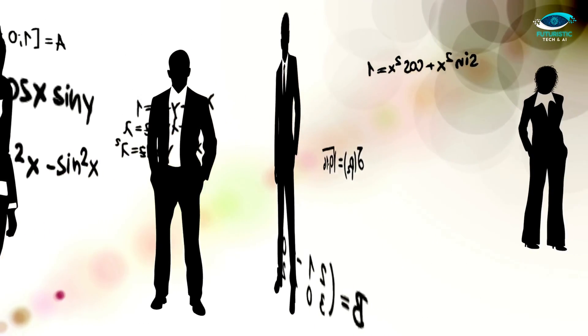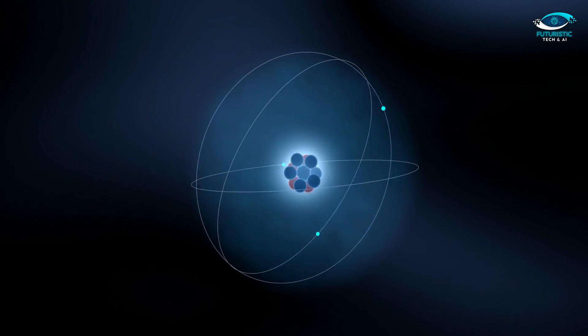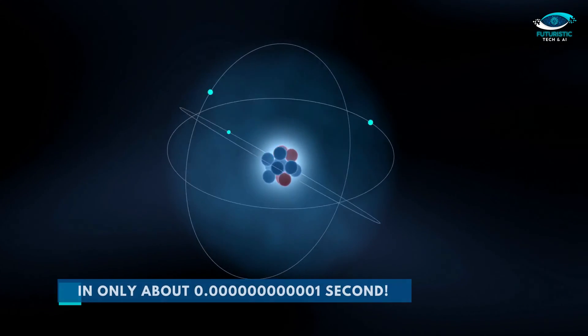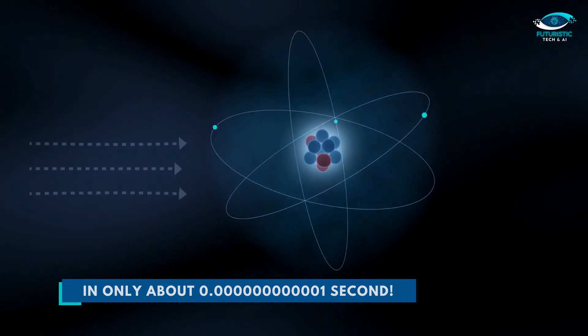In fact, physicists calculated that the electron should lose all of its energy and spiral down into the proton in only about .00000000001 seconds.